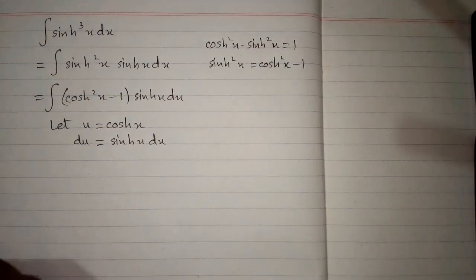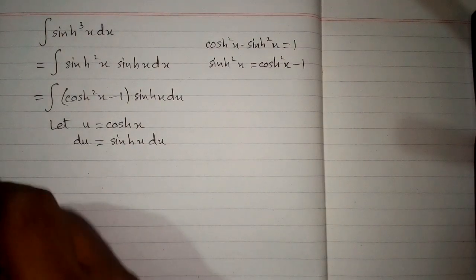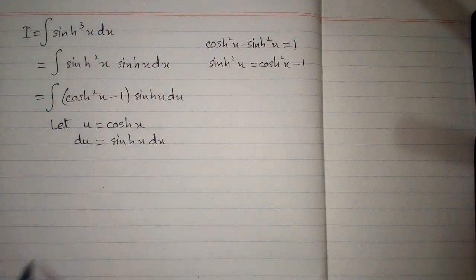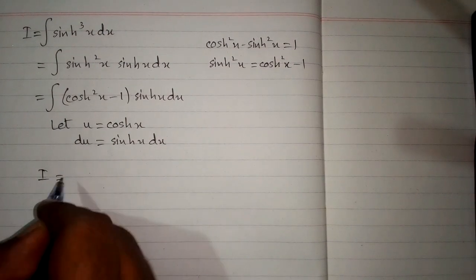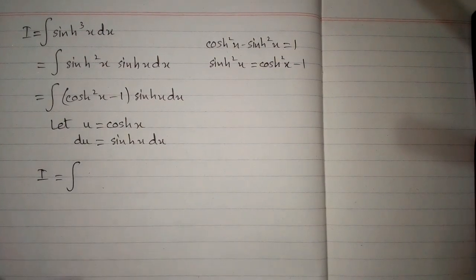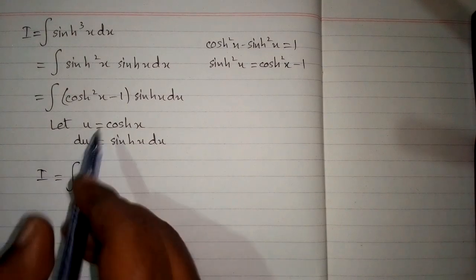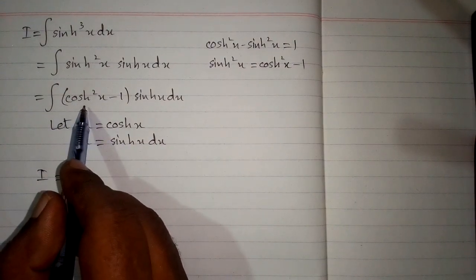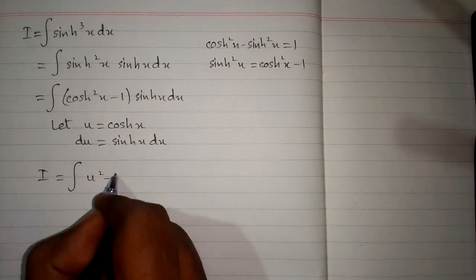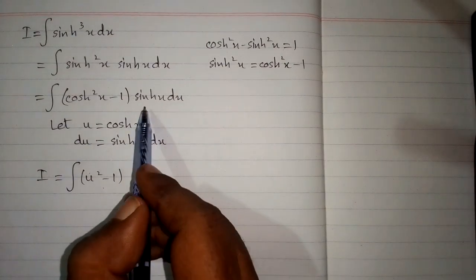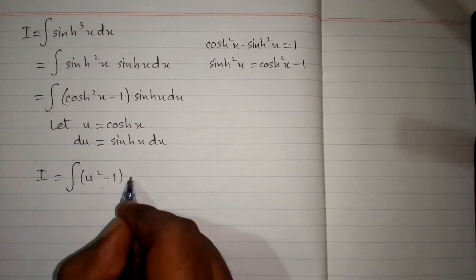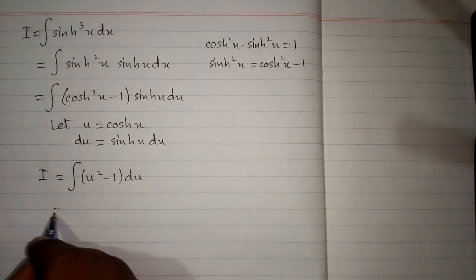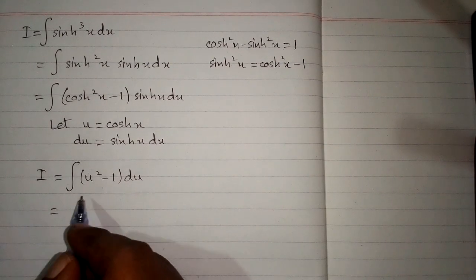Now suppose the above integral is I, so the integral I will become here we will put u. So we have u square minus 1 and in place of hyperbolic sin x dx we can put du.